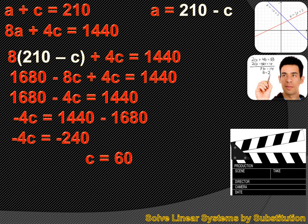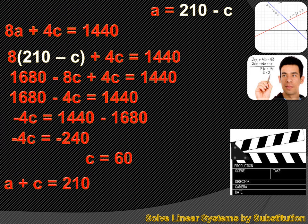Now we know one of our two variables, but we still need to solve for the other. We take either of the two equations — let's take A plus C equals 210 — and substitute 60 for C. It reads A plus 60 equals 210. We solve for A by subtracting 60 from both sides, and we come up with A equals 150. Again, the theater sold 150 adult tickets and 60 children's tickets.